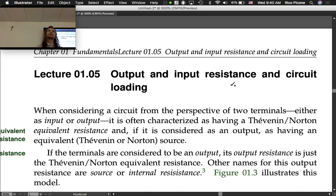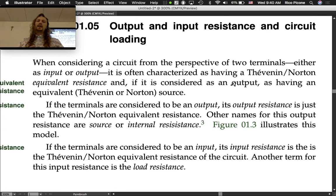This is true from simple circuits to very complicated circuits, entire instruments. If the terminals are connected to be an output, its output resistance is just the Thevenin or Norton equivalent resistance. Other names for this output resistance are source resistance or internal resistance.